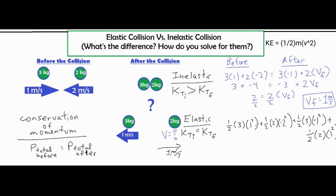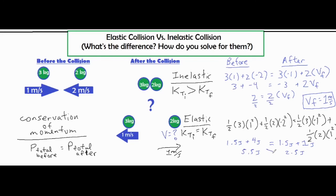I set up my kinetic energies — both objects before the collision and both objects after. Working those out, it comes out to 1.5 joules plus 4 joules on the left, equaling 1.5 joules plus 1 joule on the right. So I have 5.5 joules before and 2.5 joules after, which are clearly not equal. Because of the sound and thermal energy created during the collision, kinetic energy was lost.